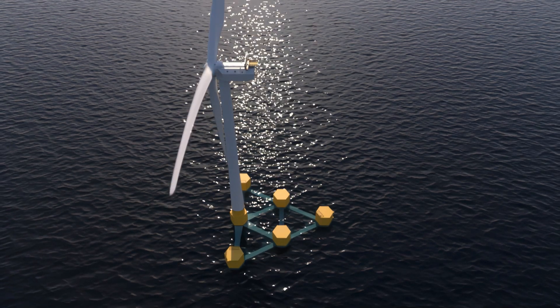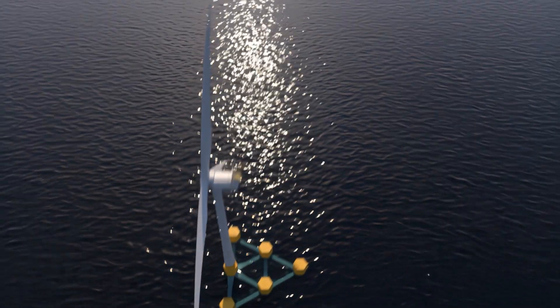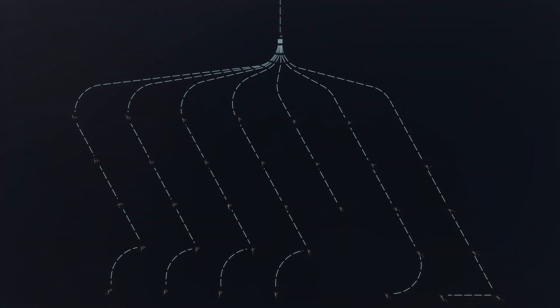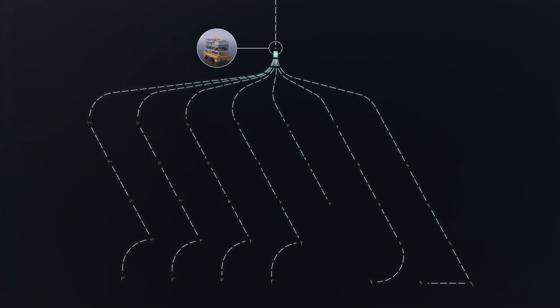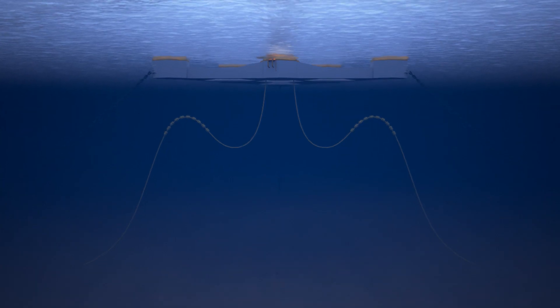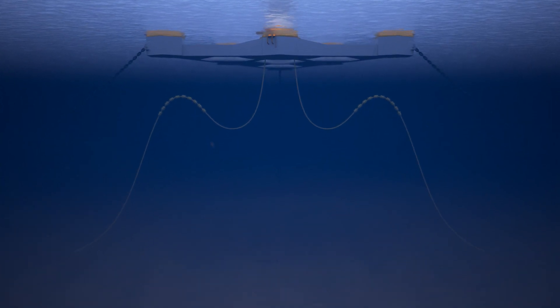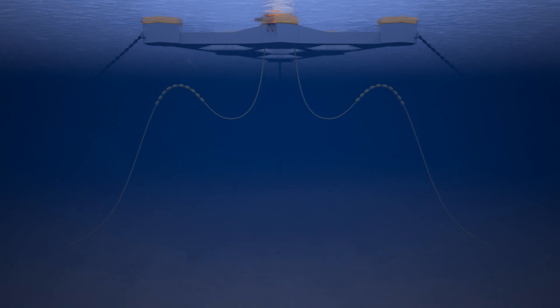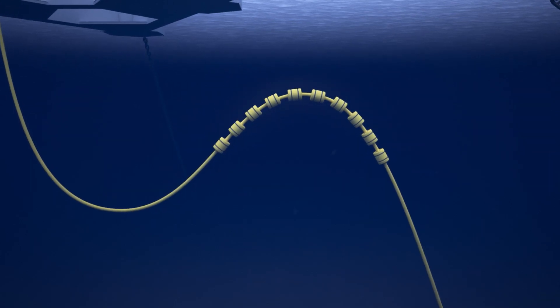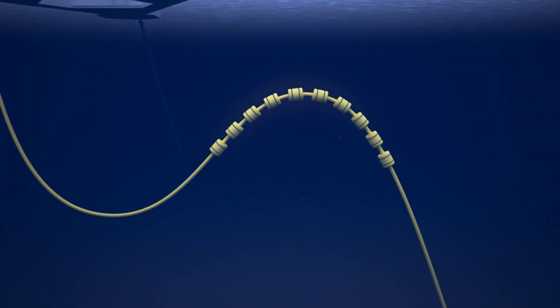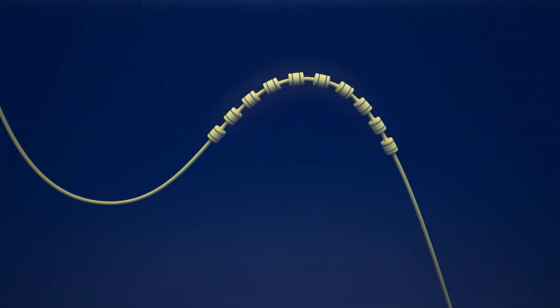Once the wind turbines and the static submarine cable are in place, the interconnecting cables between the wind turbines are installed. These cables are dynamic with an upward S-shaped profile to adapt to the movement of the platforms caused by ocean dynamics.